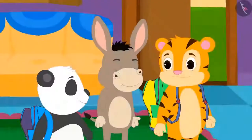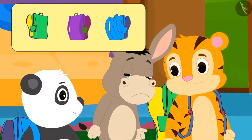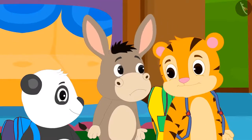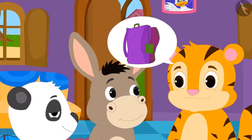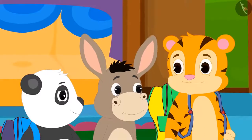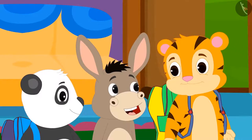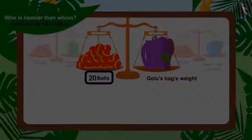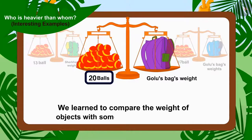Uncle taught the children to compare the weight of items using a weighing balance. Finally, Sheer Khan and Golu realized that Bhola's bag was indeed heavier than their bags. Knowing this, Sheer Khan and Golu told Bhola that they would carry his bag for some distance to help him. Children, you must always help your friends too. In this video, we learnt to compare the weight of objects with some interesting examples.